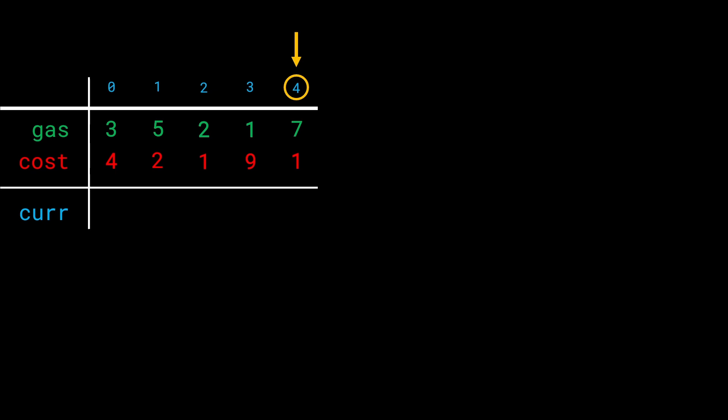When we start at station 4, we have gas 7 and cost 1. That means we start from an empty tank and fill in 7 units of gas. Cost 1 means that to travel from station 4 to station 0 — remember this is a circular route — it takes 1 unit of gas. So the current amount of gas remaining is 6.